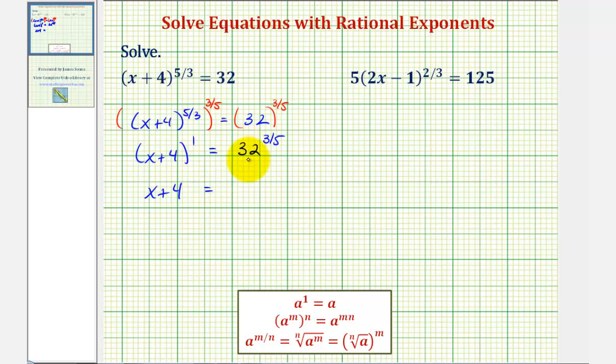And now on the right side, to evaluate 32 to the three-fifths power, we'll write this as a radical, where the denominator gives us the index, and the numerator would be the exponent, where the exponent can be either underneath the radical or outside.